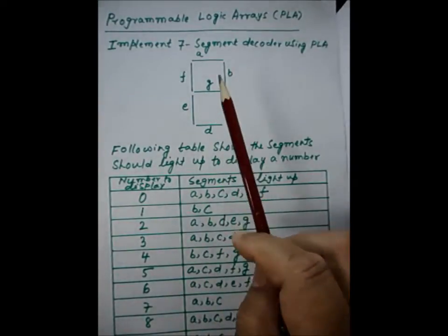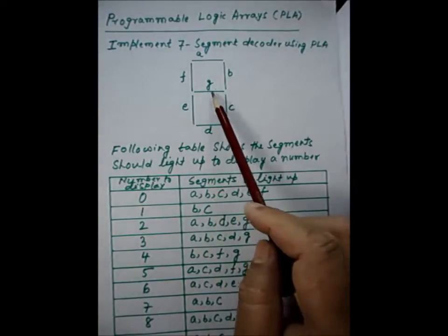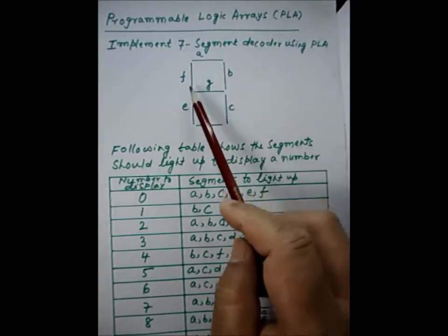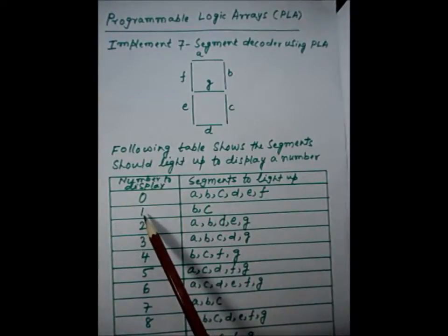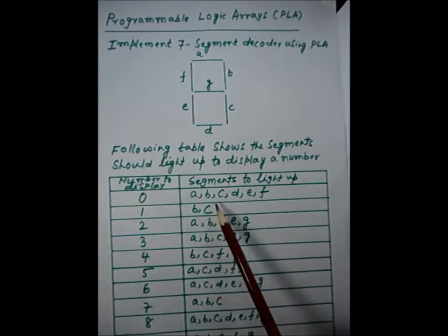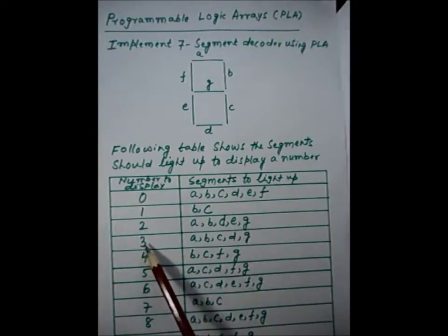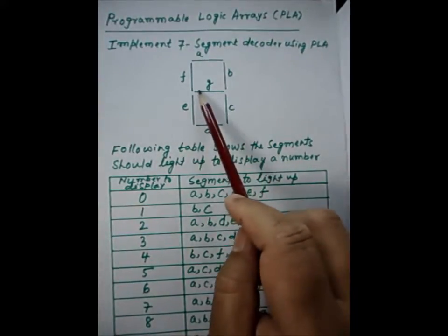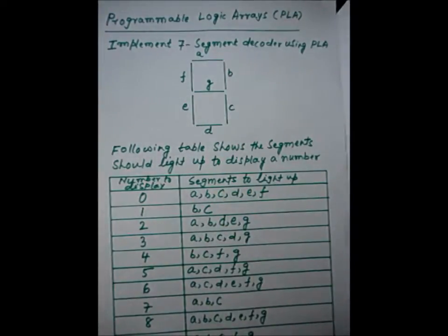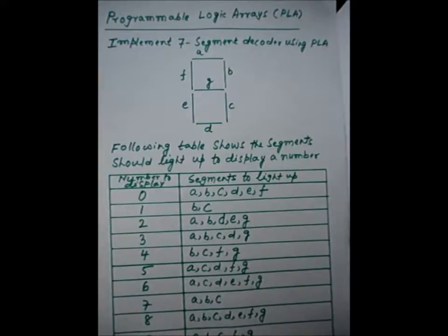For example, to display 0, all LEDs except G should glow — so A, B, C, D, E, F will display. To display 1, only B and C should display. To display 3, A, B, C, D, and G should display. We made a table here showing, according to the number to be displayed, which LEDs should be on.